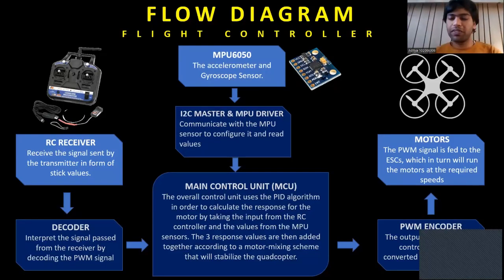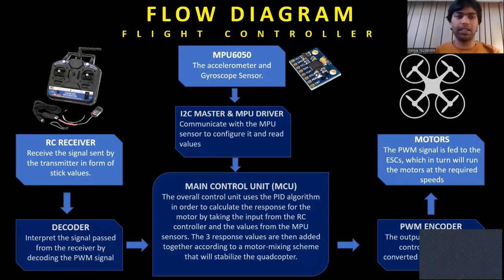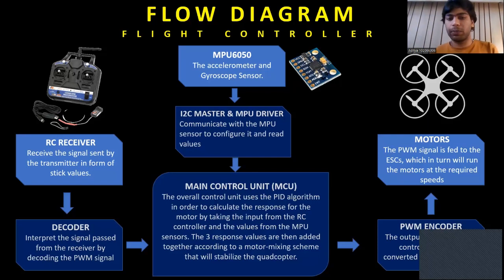Here is the flow diagram of the flight controller. First, we have the I2C master and the MPU driver — these are modules embedded on the FPGA used to get values from the MPU-6050 sensor. These values are transferred via a low-pass filter into the main control unit. On the other side, we have an RC receiver receiving values from the transmitter, which are passed into the PWM decoder. The decoder decodes the PWM signal to obtain the duty cycle of the input wave, and this is passed into the main control unit.